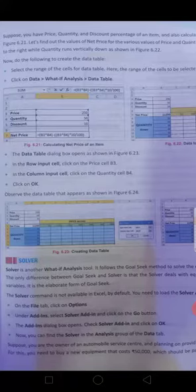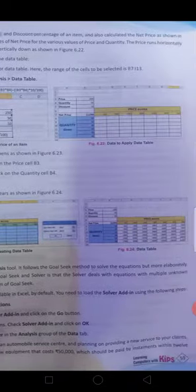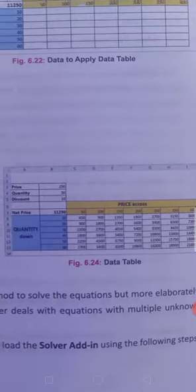Row input cell, click on the price cell B3. Column input cell, quantity cell B4. How much quantity? In the column input cell click on the quantity cell B4. Now click on OK. Observe the data table that appears as shown in figure 6.24. This is our data table.